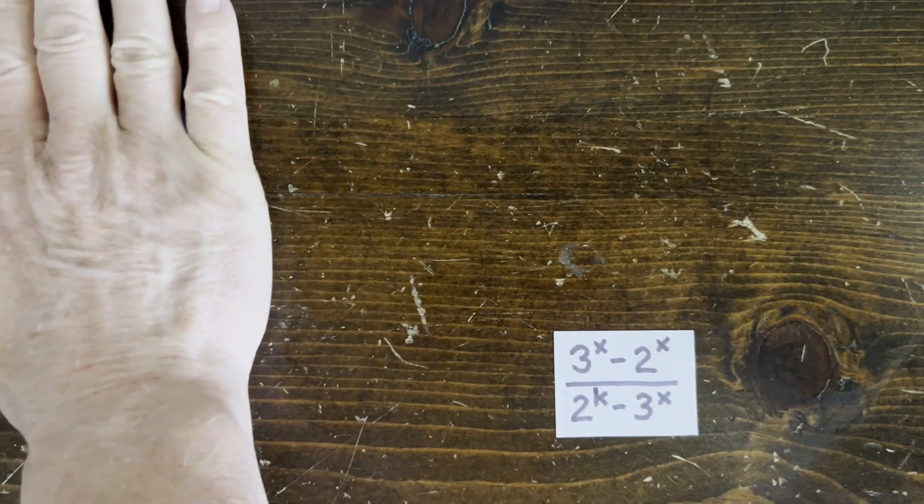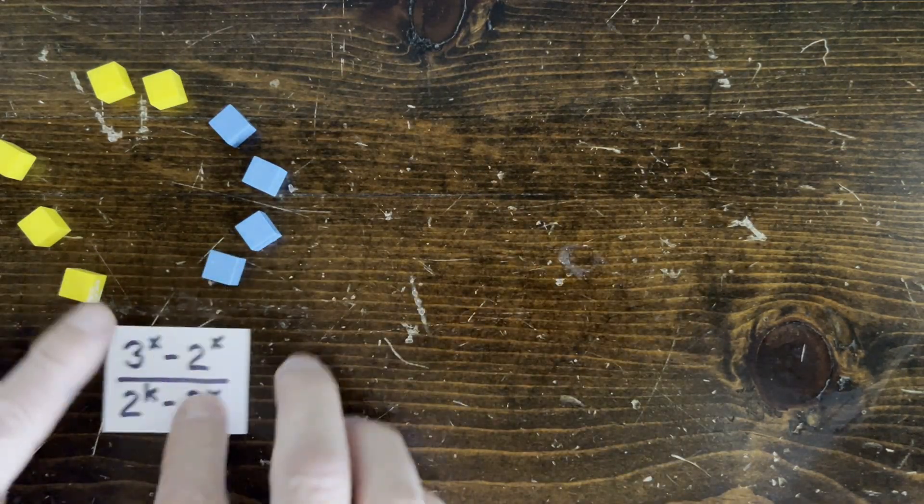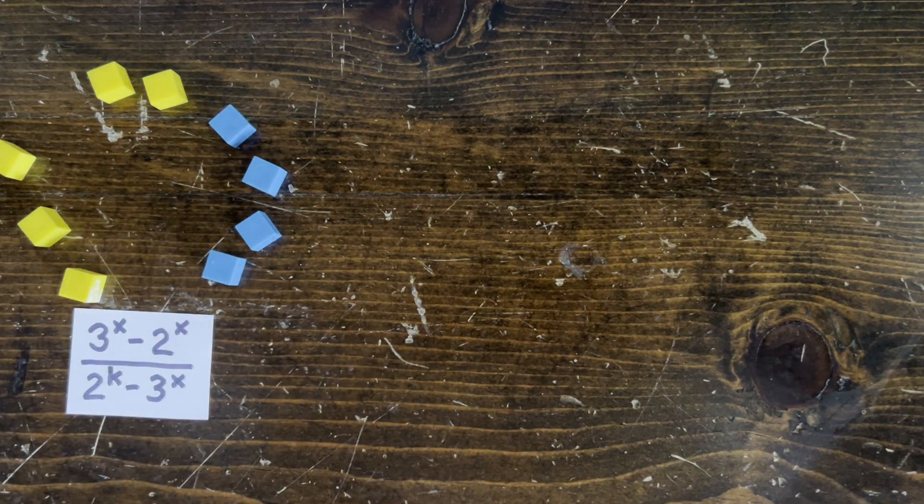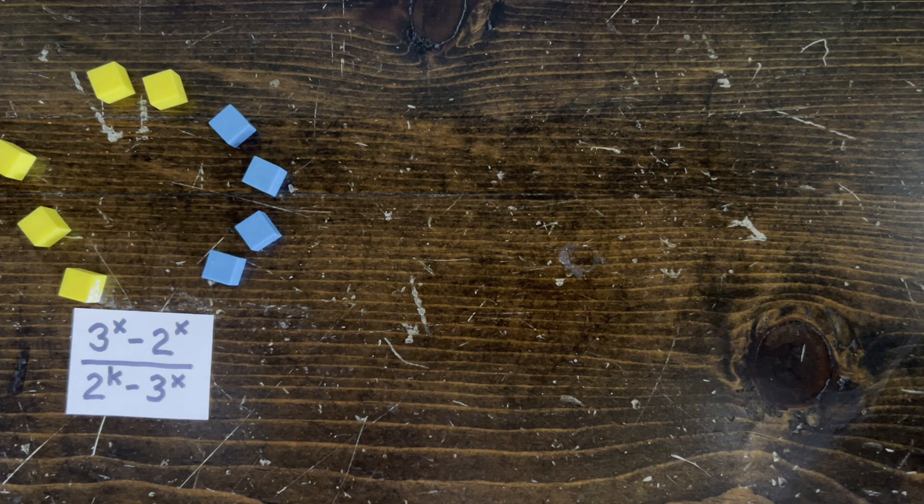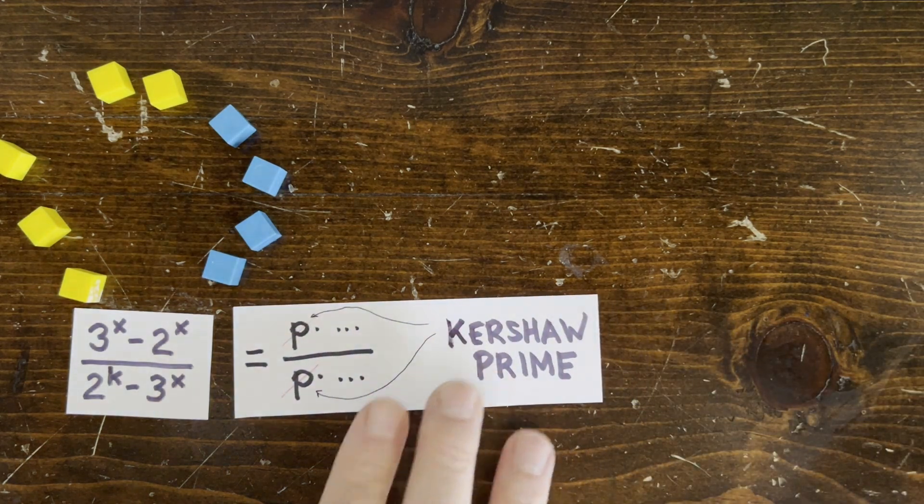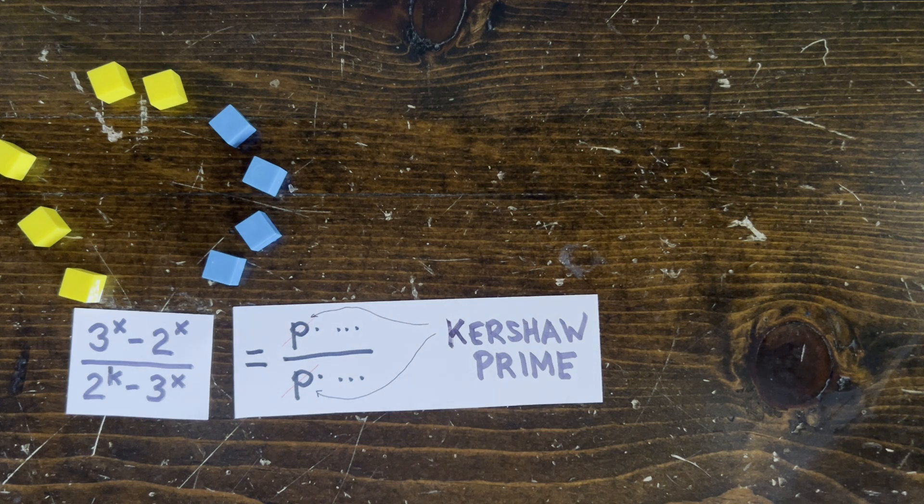So we'd like a simple way to show that this is never an integer for any co-prime k and x. It turns out there aren't too many prime factors p that are common to these two expressions in the first place.